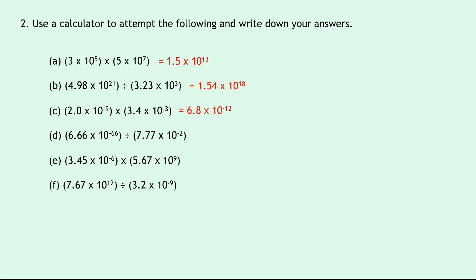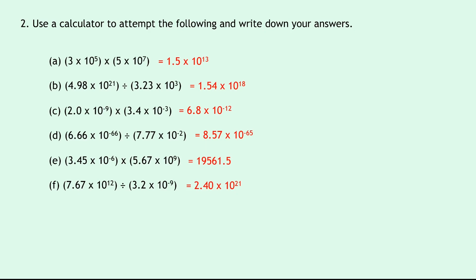For Part D, 6.66 times 10 to the minus 66 divided by 7.77 times 10 to the minus 2 gives an answer of 8.57 times 10 to the power of minus 65. Part E: 3.45 times 10 to the minus 6 times 5.67 times 10 to the 9, put that into your calculator, and you should get an answer of 2.40 times 10 to the power of 21.